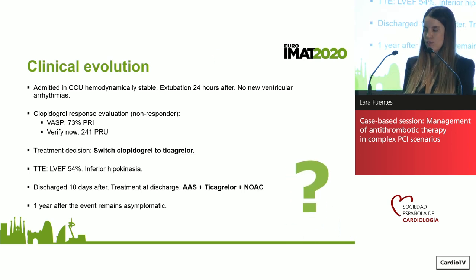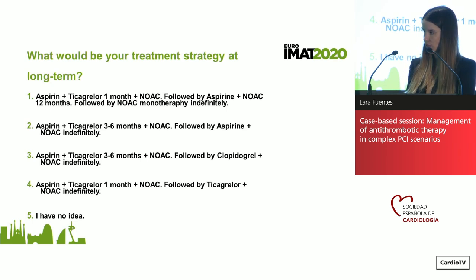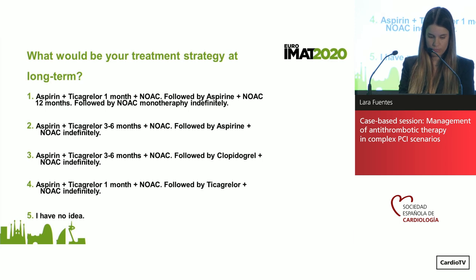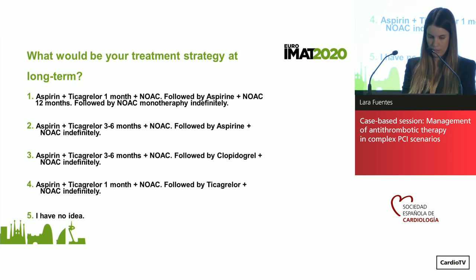Now comes the third and last question, related to the very long-term treatment of this patient. Option one: aspirin plus ticagrelor for one month of triple antithrombotic therapy, followed by one year of dual antithrombotic therapy, followed by NOAC monotherapy. Option two: triple antithrombotic therapy with ticagrelor for three to six months, followed by double therapy with aspirin and NOAC. Option three: triple antithrombotic therapy with ticagrelor and NOAC followed by double therapy with NOAC plus clopidogrel. Option four: triple antithrombotic therapy for one month plus dual antithrombotic therapy indefinitely. Option five: I have no idea.